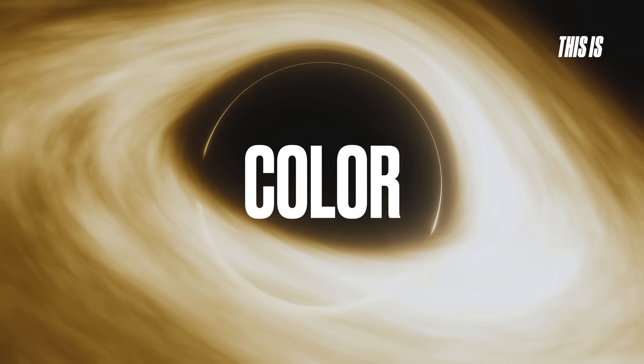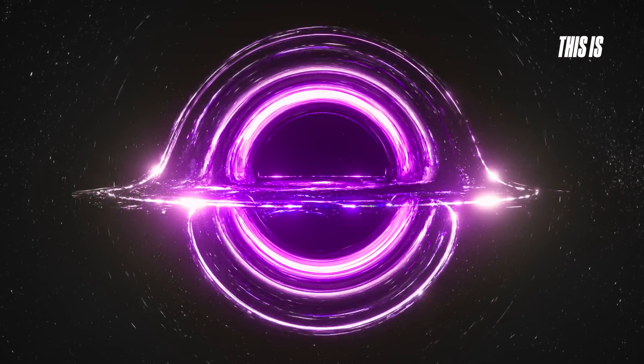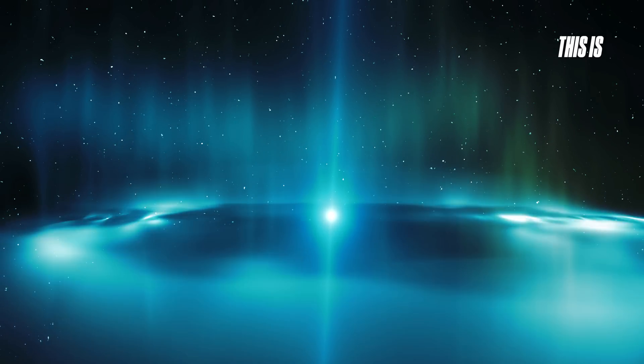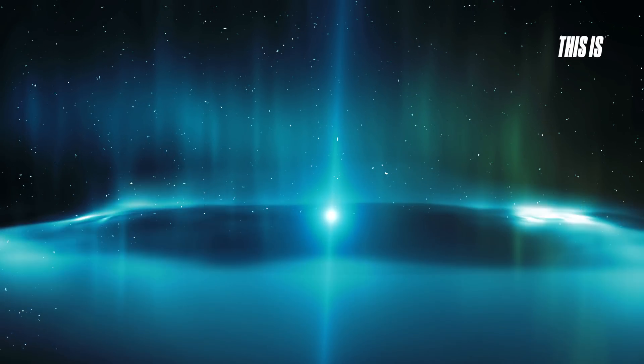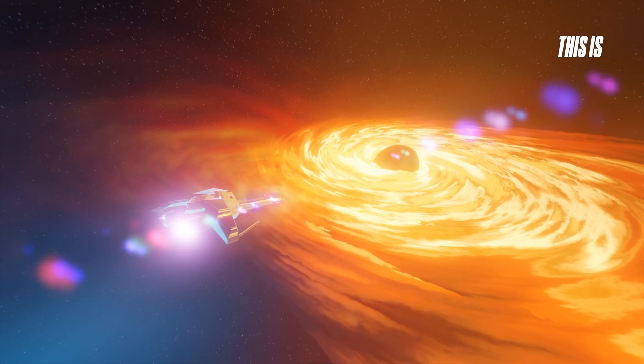A black hole itself has no color because it does not emit light. However, its surroundings can display a range of colors, from red to blue to white, depending on the accretion disk, redshift effects, and high-energy jets of matter and radiation. These jets, moving at nearly the speed of light, are expelled by supermassive black holes, neutron stars and quasars.